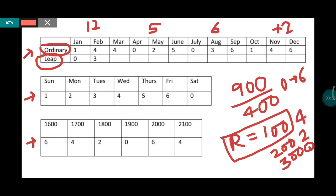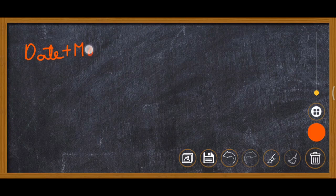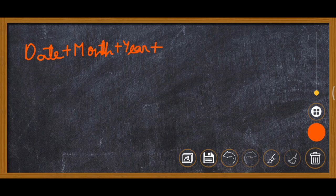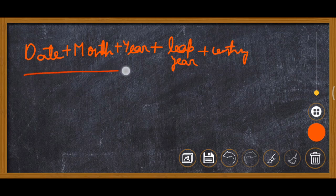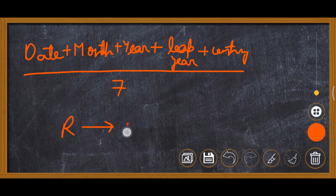Now we will learn the method using a few examples. The formula is: date + month code + year + number of leap years in that year + century code, all divided by 7. Whatever remainder comes is compared to the day code table to find the day.